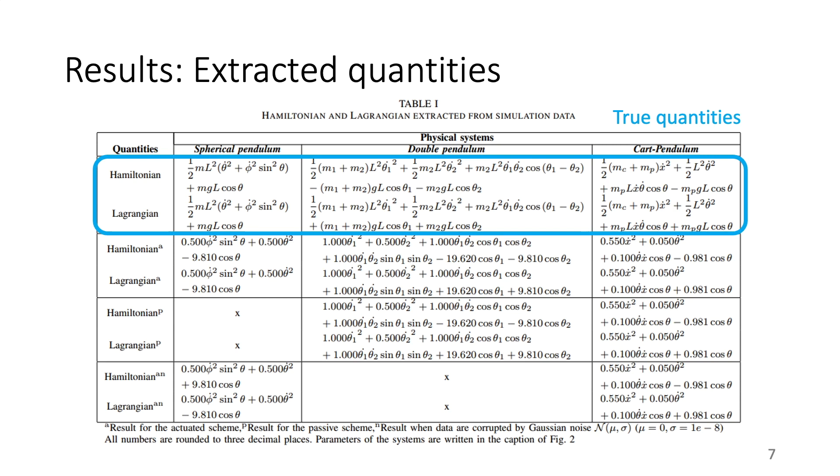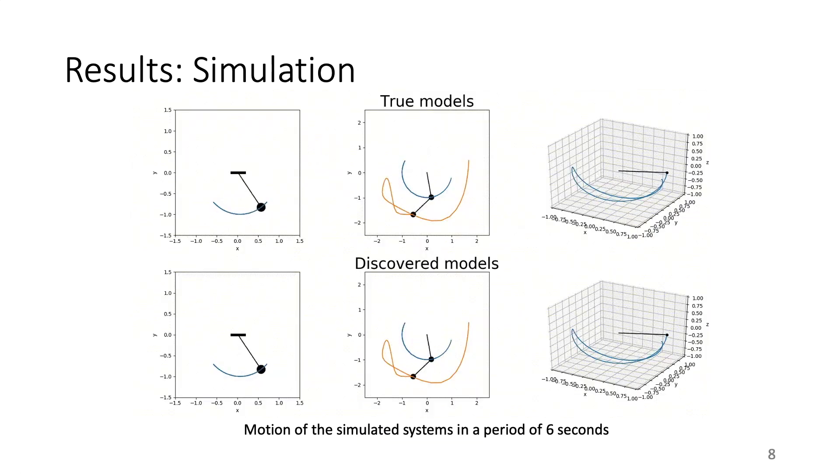Here is the motion of the system in a period of 6 seconds. The equations of motion are calculated using the Euler-Lagrangian method, and they are then used for simulation. As the discovered Lagrangian functions match the true quantities, it is no abstruse that the motions of the discovered models closely resemble those of the true models, even in the range from the third second to the end, which is beyond the learning dataset.